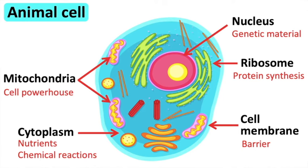Mitochondria are known as the powerhouses of the cell. They contain enzymes for aerobic respiration, and this is where most energy is released from respiration. Ribosomes are small organelles found in the cytoplasm where protein synthesis occurs.